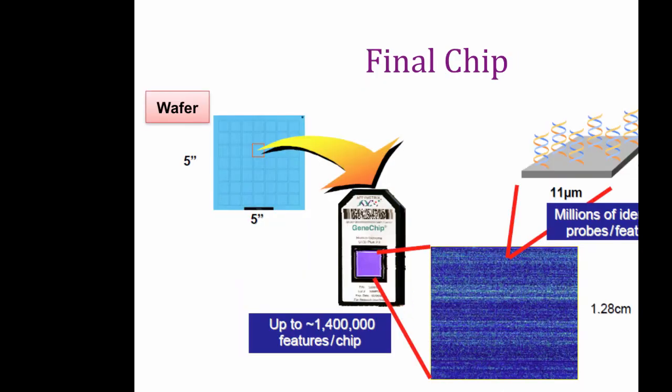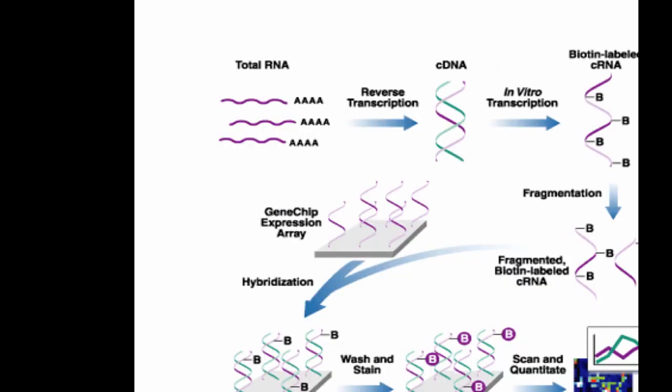At the end of the photolithographic process, you've produced 1.5 million spots, each containing millions of probes, ready for measurements. It's worth going through the Affymetrix sample prep quickly because it's a little unusual. Like all microarrays, it starts with RNA — specifically total RNA — which gets reverse transcribed into cDNA.